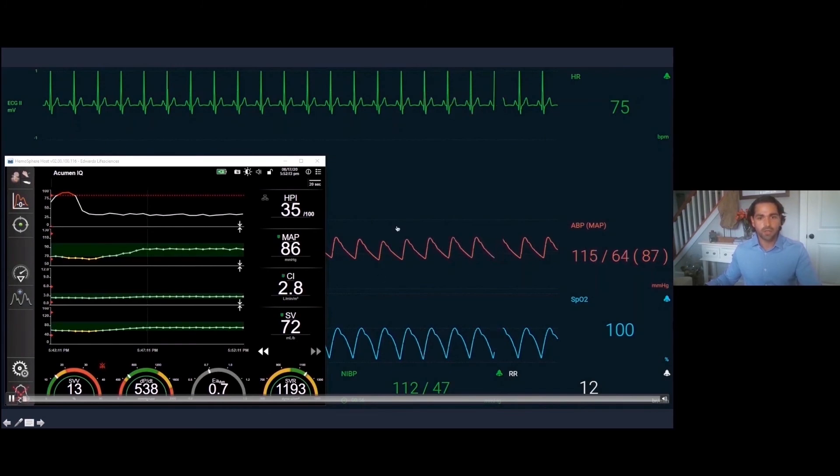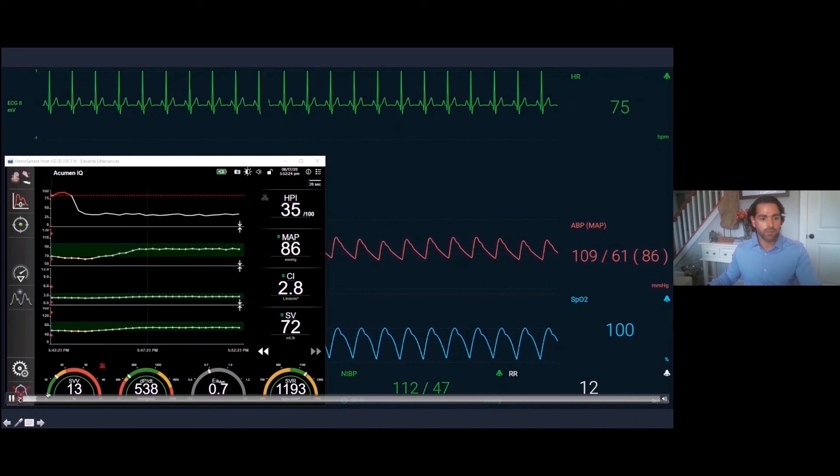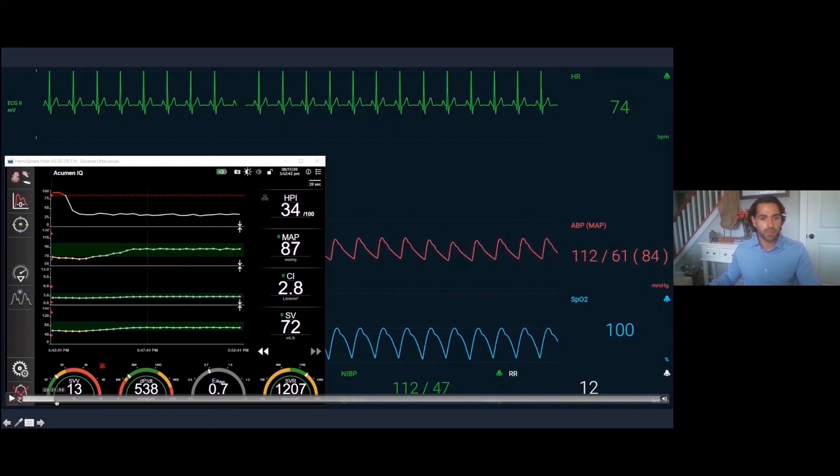You can see a live EKG like you normally would, and this is live too. This is going to be our trend data. We can see here your stroke volume variability is up a little bit, stroke volume is okay, all these other numbers look great. Your HPI is 35, very low, very low chance of becoming hypotensive very soon. But let's speed this up and see what happens to this patient.